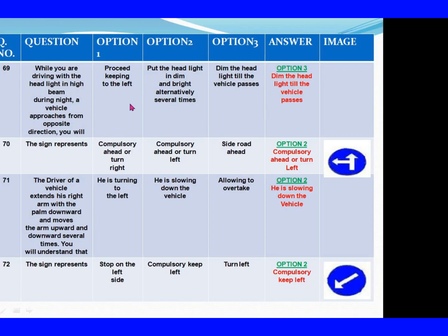Question 70: The sign represents. Option 1: Compulsory ahead or turn right. Option 2: Compulsory ahead or turn left. Question 71: The driver of a vehicle extends his right arm with the palm downward and moves the arm upward and downward several times. You will understand that. Option 1: He is turning to the left. Option 2: He is slowing down the vehicle. Option 3: Allowing to overtake. The right answer is Option 2: He is slowing down the vehicle.